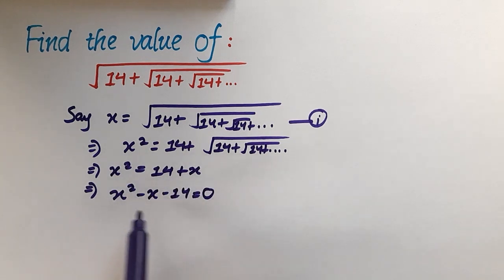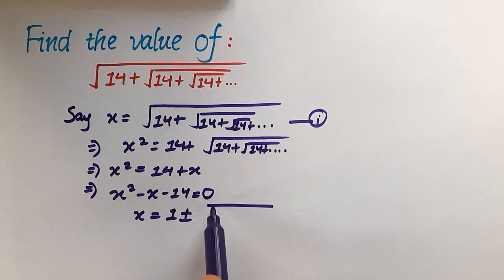Now this is a quadratic equation in x, so if we apply the quadratic formula we'll get the values for x. So x will be equal to minus b plus minus under root b square minus 4ac over 2a.